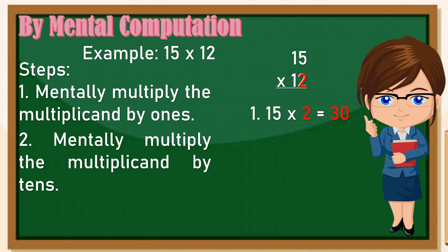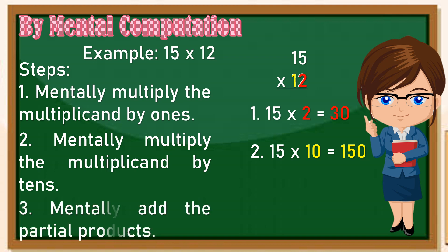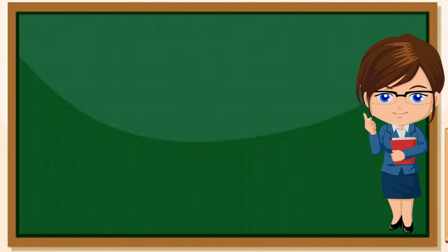Mumultiply natin ang 15 sa 10. Bakit 10? Dahil yung 1 ay nasa tens place, kaya ang value nito ay 10. Kaya 15 times 10 is 150. And mentally add the partial products. So we have 30 plus 150 is 180. Simple po, katulad ng kanina.